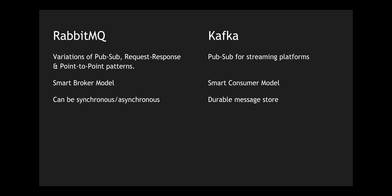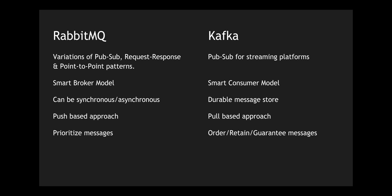Kafka on the other hand is a streaming log — it's mostly durable and you can leverage it for replaying messages and completely rely on it for pulling messages. RabbitMQ follows a push-based approach where a producer pushes the message onto a specific queue for a particular consumer. Kafka leverages a pull-based model where producers pump logs into the Kafka platform and the consumer's responsibility is to pull these messages from each partition and topic.